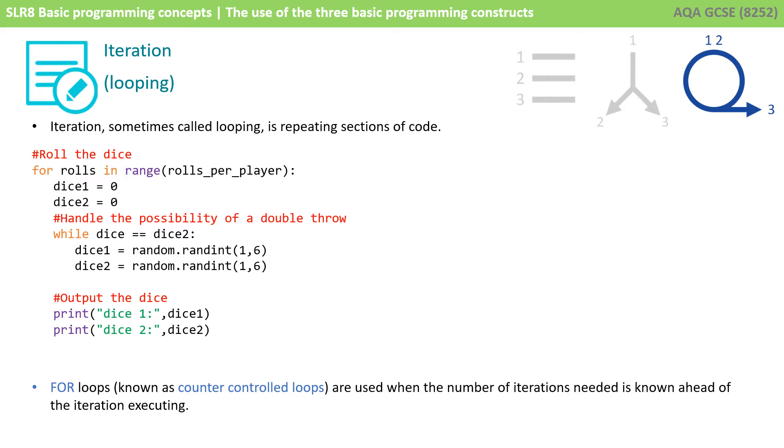The final programming construct is iteration, often known as looping. And this is where we get to repeat sections of code. There are several ways of doing this. A popular one is the for loop.